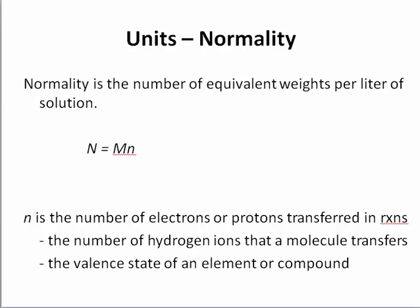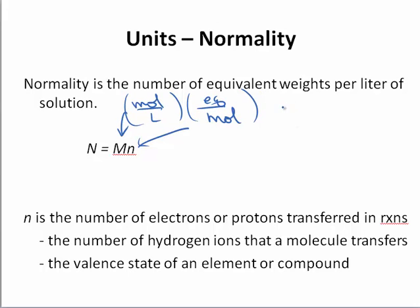Normality is the number of equivalent weights per liter of solution. It can be calculated by multiplying the molar concentration (moles per liter) times the equivalent number n, which gives units of equivalents per mole. Together these yield units of equivalents per liter, or normal, given the symbol big N. Normal.